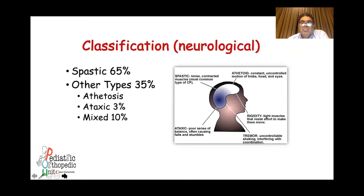Classification of cerebral palsy is either neurological, subdivided into spastic CP — which constitutes two-thirds of cases — and other types: the athetotic, the ataxic, or the mixed types.